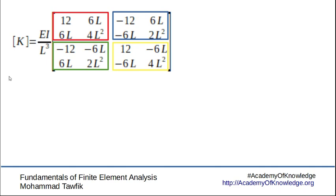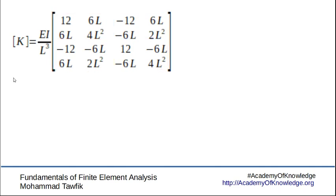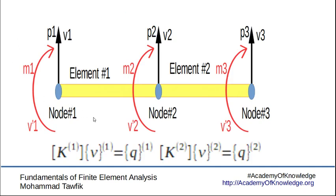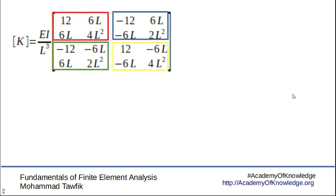The same thing will be done in the global matrix. Now we have three nodes, each has two degrees of freedom, so we have six degrees of freedom. So now we need a global matrix with six by six rows and columns. Each row and column will be associated with one of these degrees of freedom.